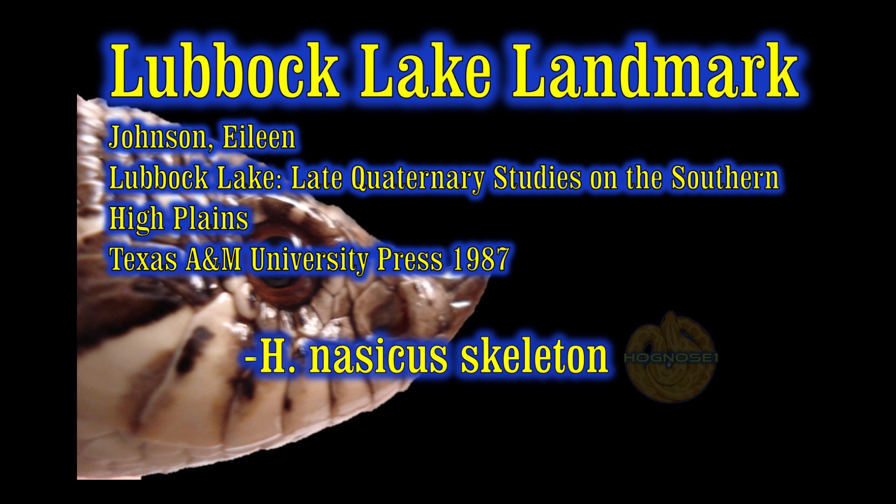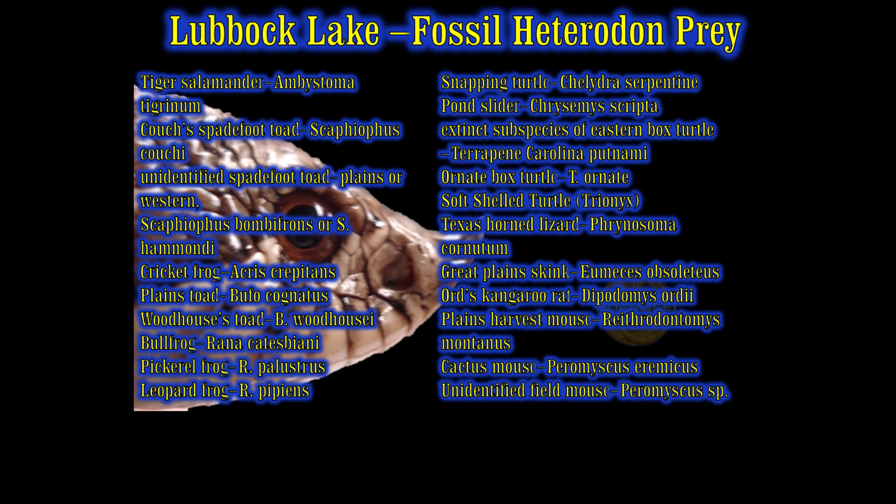Likely, a lot of the species that exist have been the same for that entire period. Of interest, in that same soil level that Dr. Johnson researched, there were already spadefoot toads, salamanders, and a lot of different prey items that nasicus already eats — small mammals and things like this. So there really probably wasn't a whole lot of severe climate change to warrant specific divergences from that point moving forward.